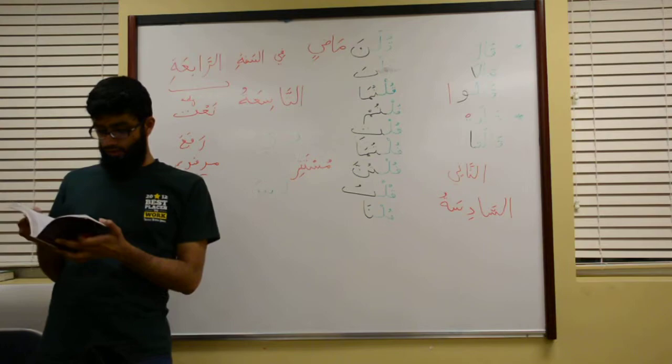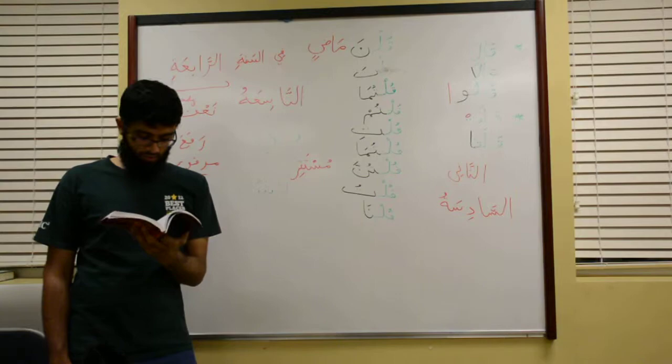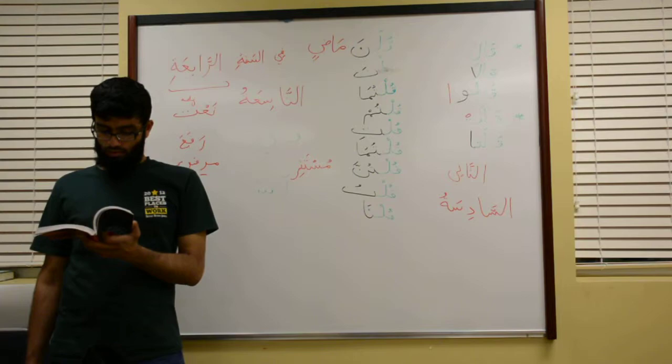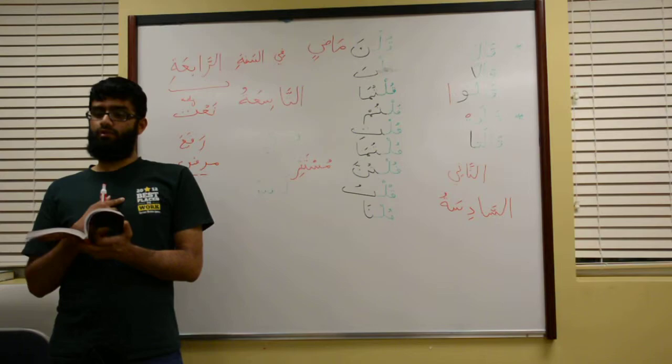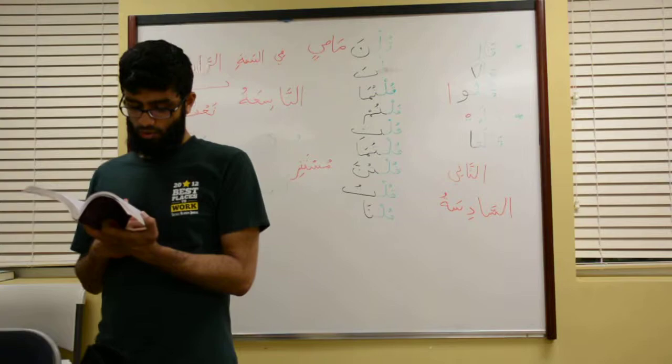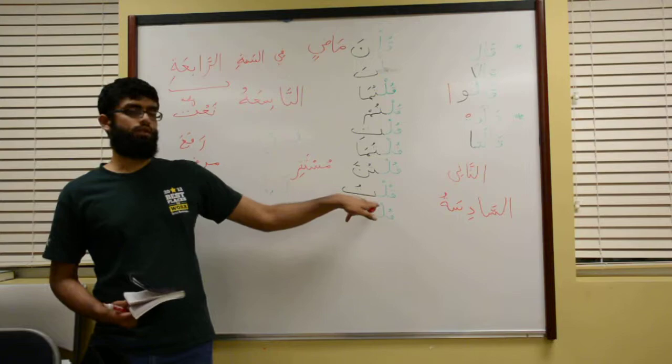Zahabta — you, masculine singular, went — the subject is the ta. Then zahabti — you, feminine. Note the difference between the masculine and feminine forms. And zahabtu — I went, masculine and feminine — the tu is the subject. When saying 'I,' it doesn't matter if you're male or female.